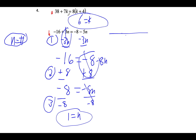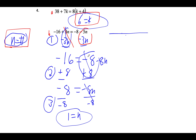Problem 4a is a challenge problem — if you tried it on your own, the answer is c equals k, but don't worry too much about that one; we'll work more on it later. For 4b, we want to get into the form n equals some number. We have negative 16 plus 3n equals negative 8 minus 5n. We subtract 3n from both sides, giving us negative 16 equals negative 8 minus 8n, since negative 5n minus 3n gives negative 8n. We add 8 to both sides to get negative 8 equals negative 8n, then divide both sides by negative 8 to get 1 equals n.